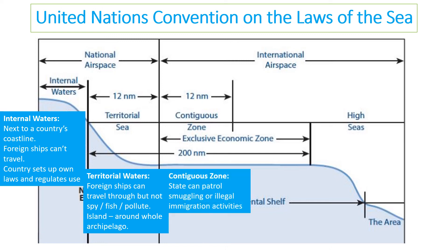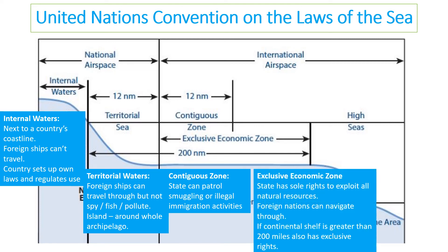The next 12 nautical miles form a contiguous zone, where the state can control and stop illegal immigration or activities, but fishing is allowed. Beyond that is an exclusive economic zone where the state has the right to exploit all natural resources, but foreign nations can pass through.